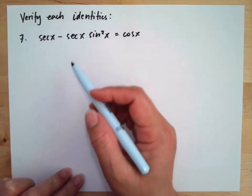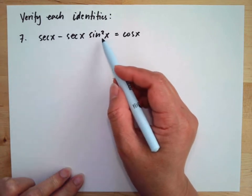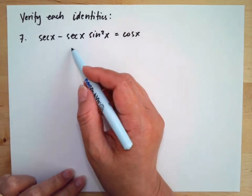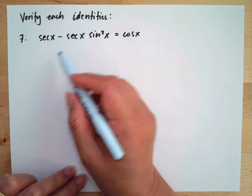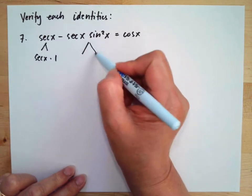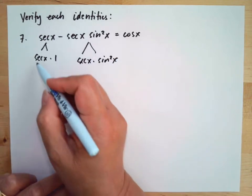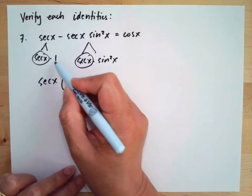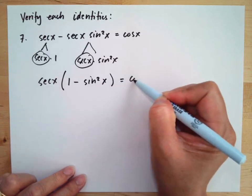We need to verify the identity: sec(x) minus sec(x) multiplied by sine squared x equals cosine x. The first thing we will do is factor out sec(x) because it is the common factor. We write sec(x) multiplied by one, minus sec(x) multiplied by sine squared x, so we take out the common factor of sec(x), giving us sec(x) times one minus sine squared x, equal to cosine x.